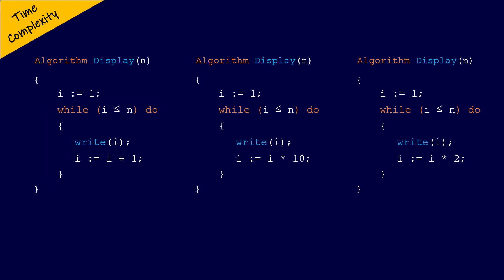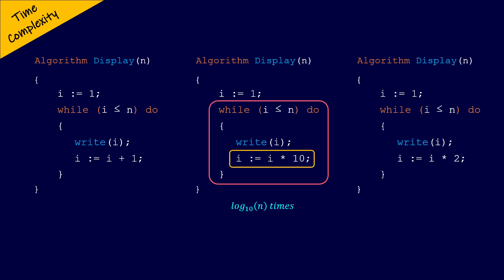The statements within the while loop of the second algorithm execute log n to base 10 times, because the variable i is multiplied by 10 each time the loop is executed, and the condition is true for i less than or equal to n.